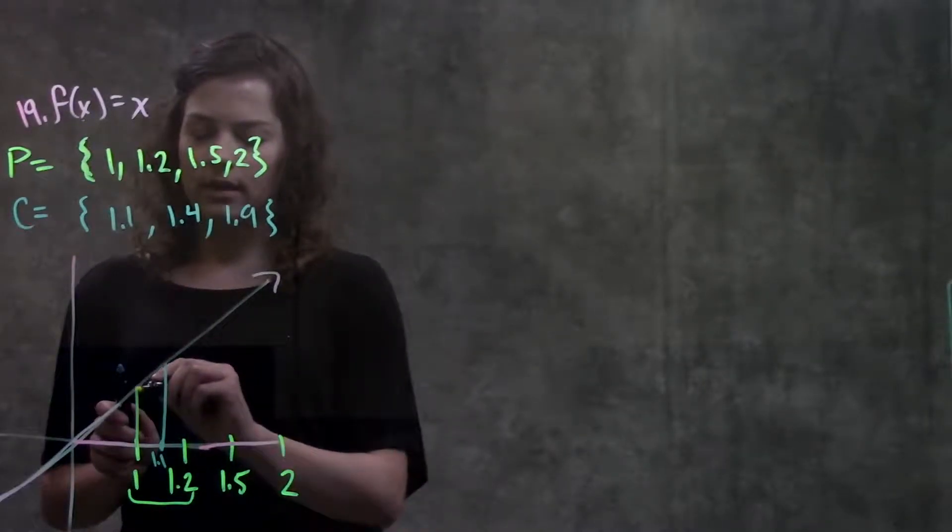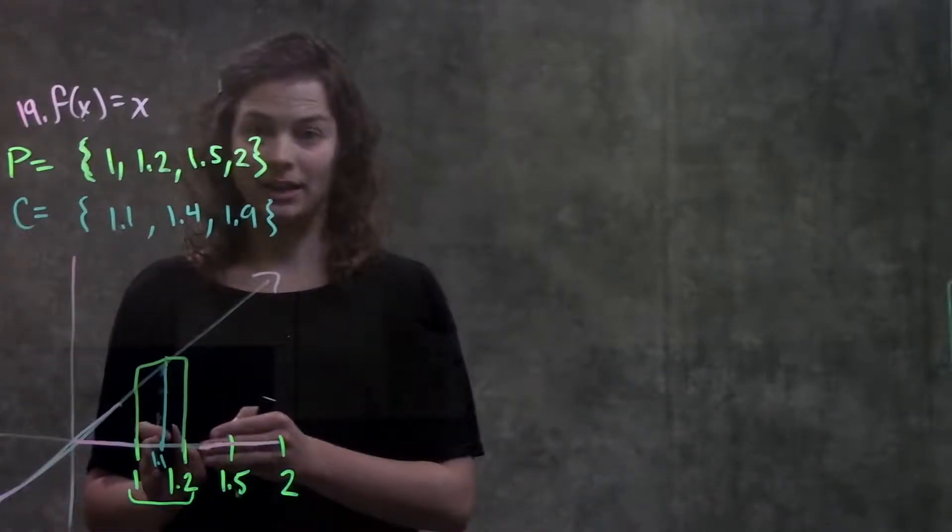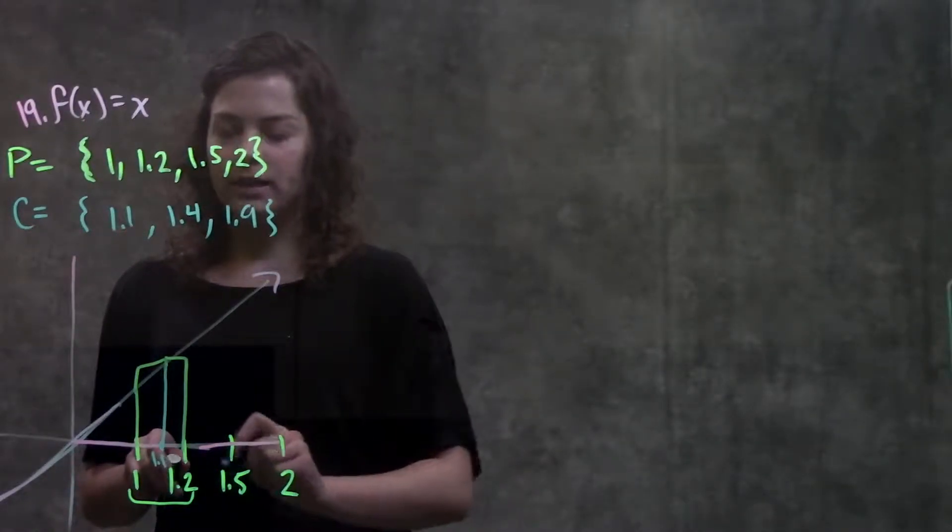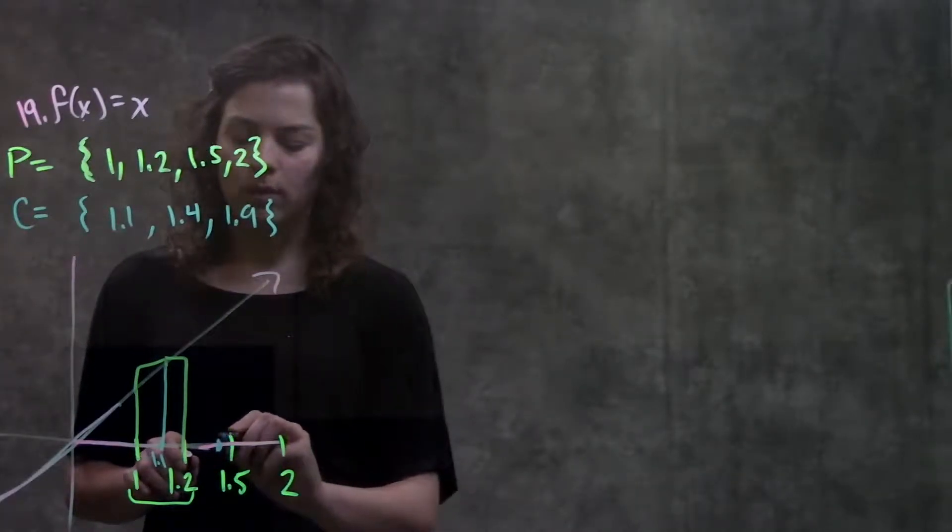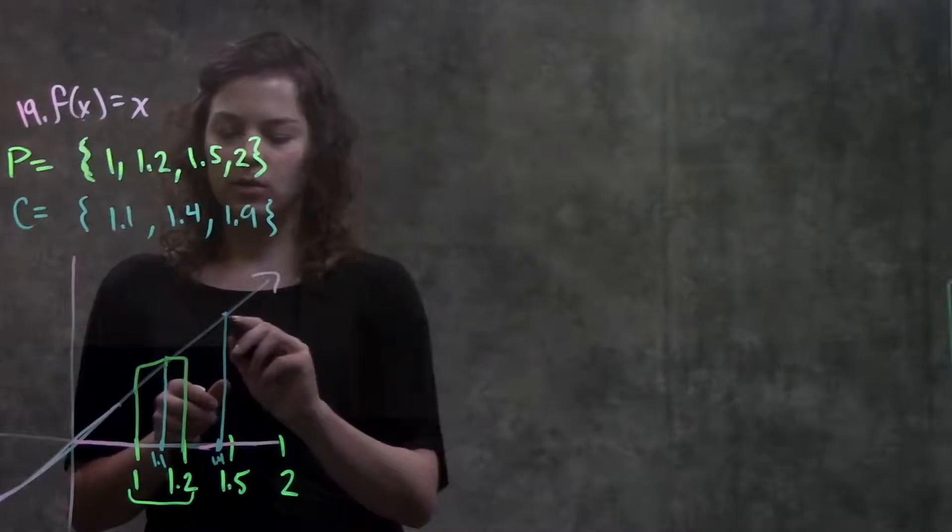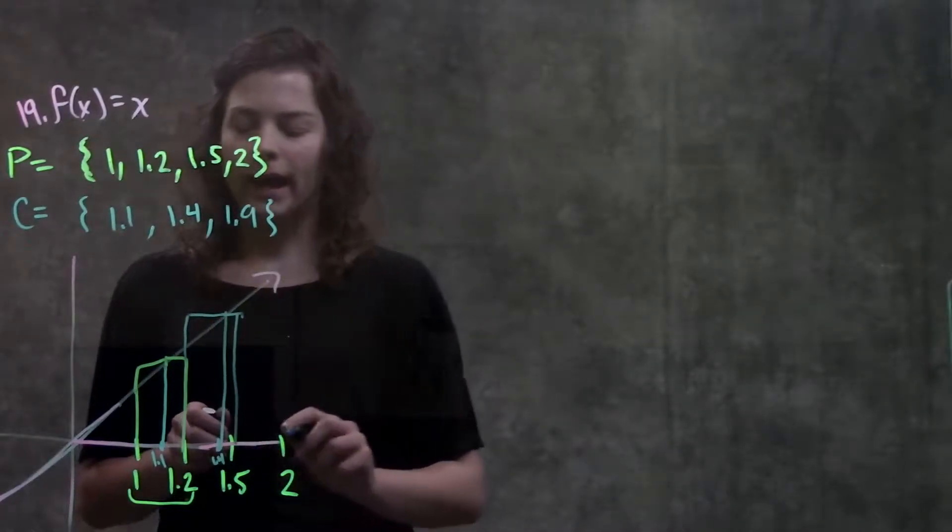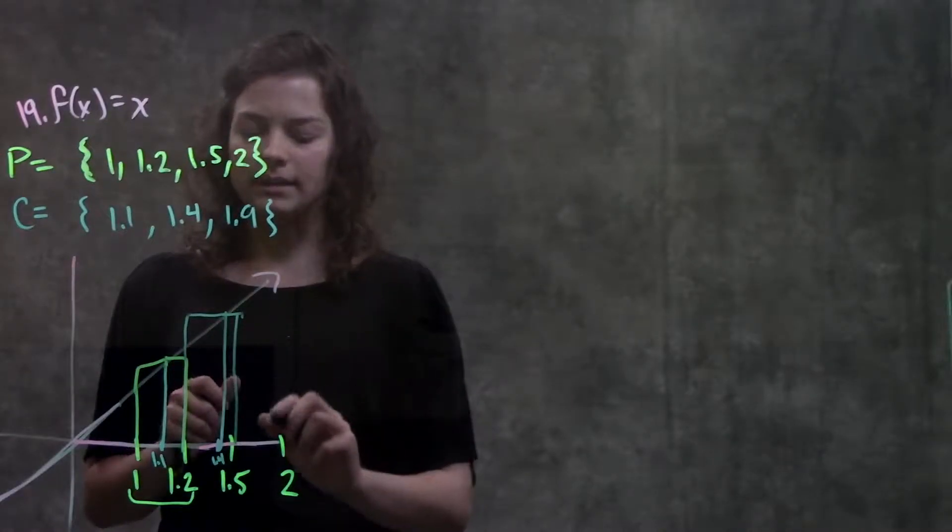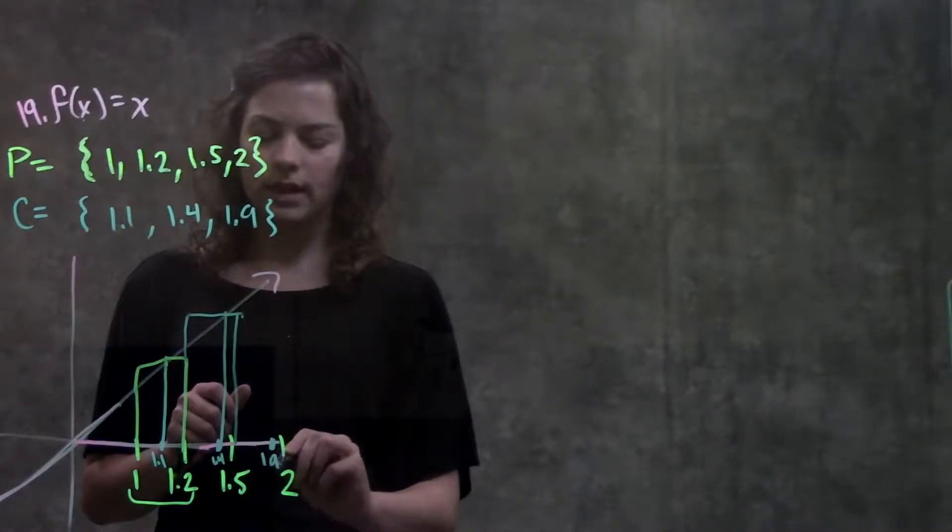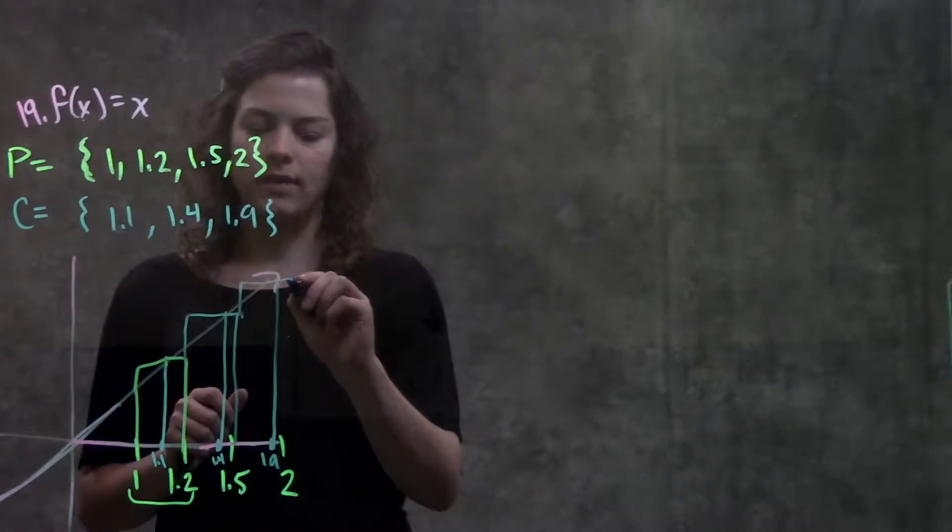And the width is just from one partition to the next one. And so on and so on. For my next partition, my height was 1.4. So I go up here for my height, and the width is just from one partition to the next one. And same thing over here. My last height was at 1.9. So right here. So I go all the way up to the function and draw my rectangle based off of that height.